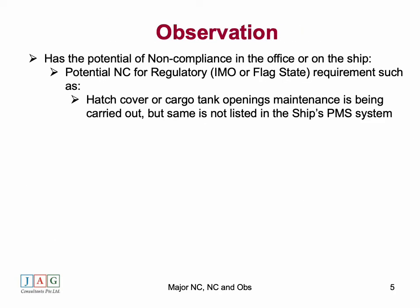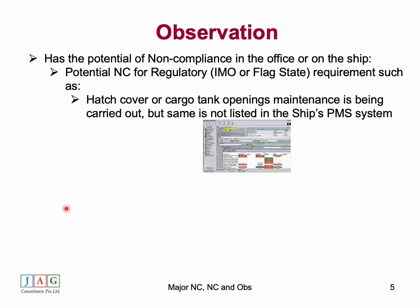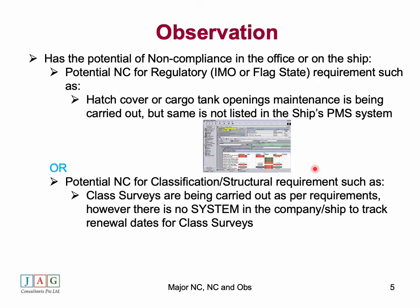An observation is something that has the potential to cause harm, but by itself is not a harm. For example, hatch cover or tank opening maintenance is being carried out and everything is fine, but when the auditor looks at the ship's PMS system he doesn't find any procedures or requirements for the maintenance of hatch covers. The auditor says it looks fine right now, but the absence of addressing it in the ship's PMS system means ship staff may miss the maintenance in future — so he classifies it as an observation, with the potential to cause a non-conformity in future.